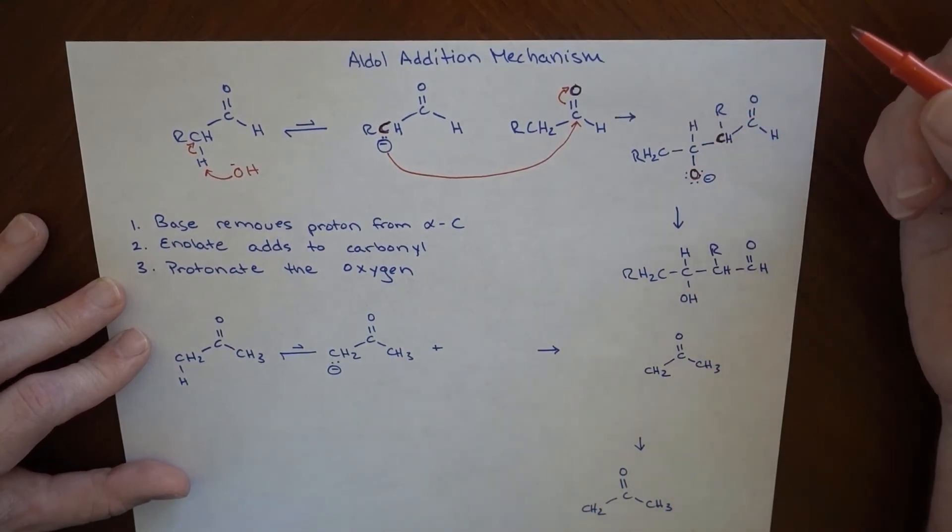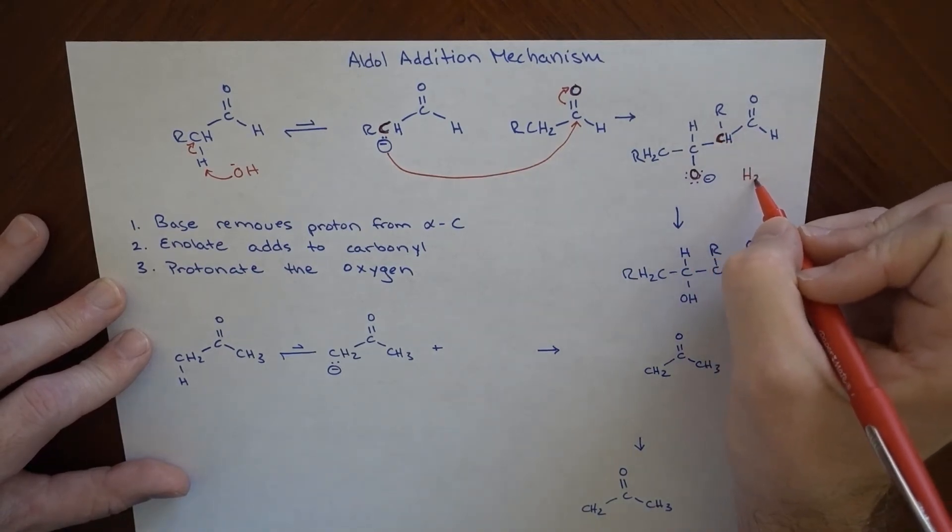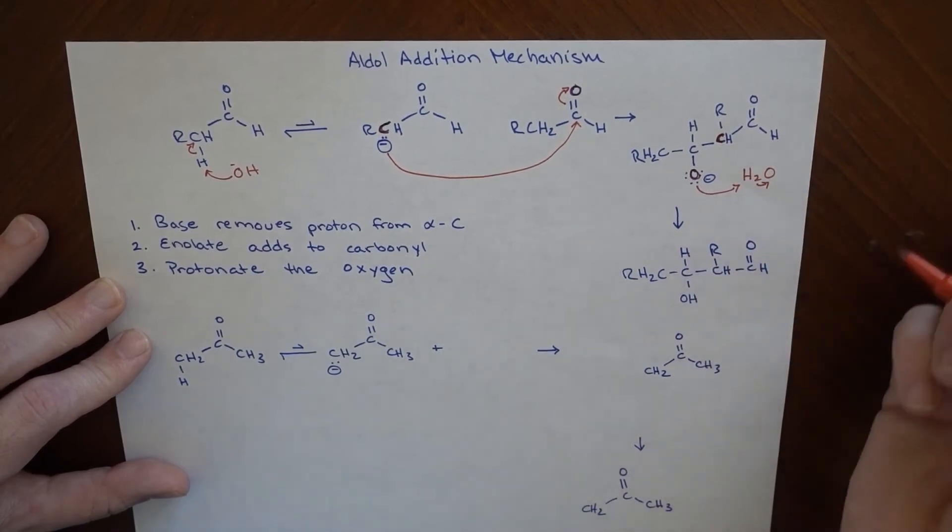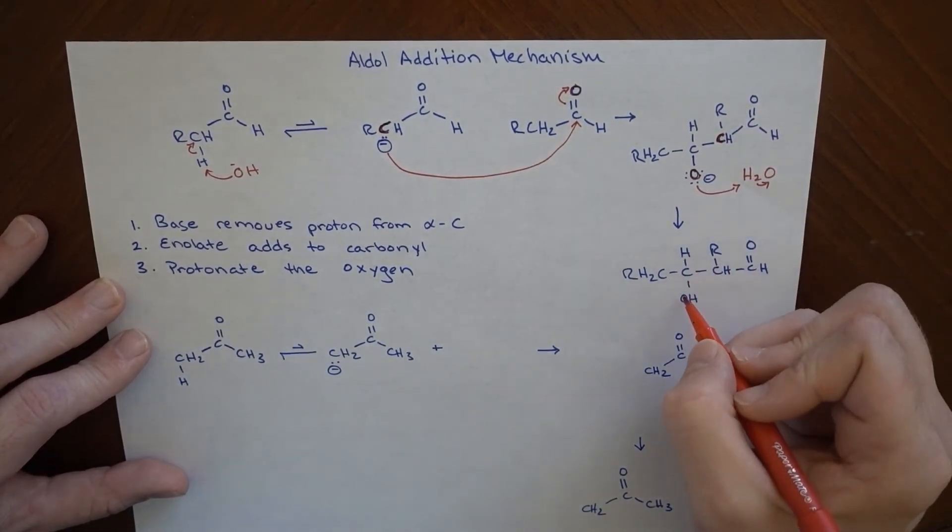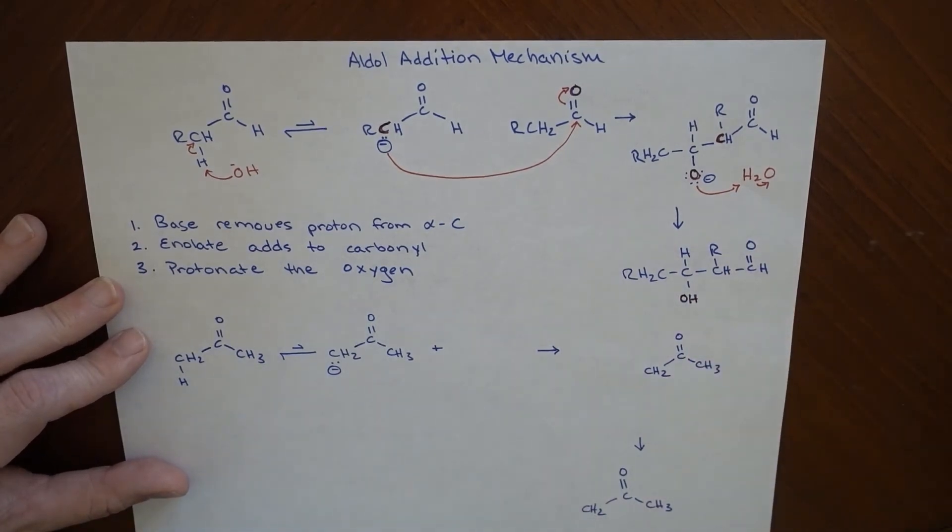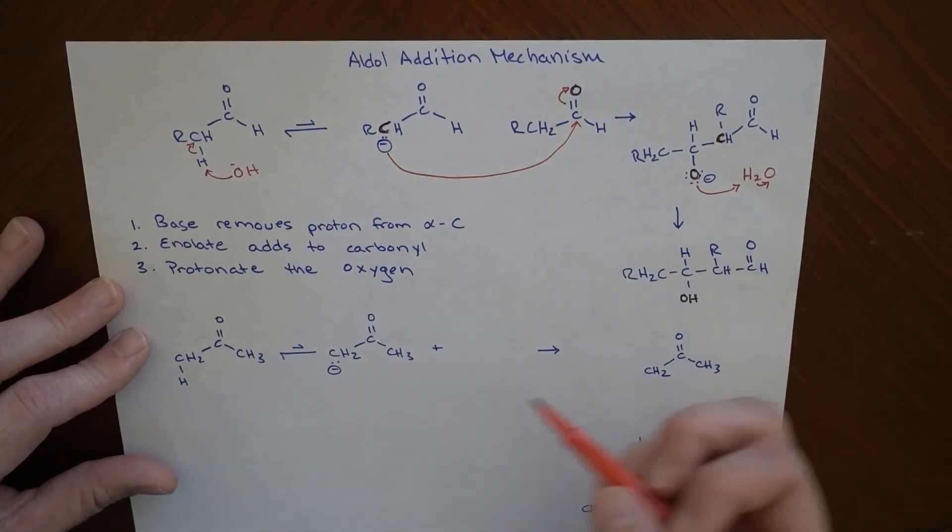And then what ends up happening is we have our water that was around before. And electrons from that will grab onto this, reforming our base catalyst. And now we've got our alcohol. So it's actually really not all that involved. It's just we make some much larger molecules starting from a much smaller one.